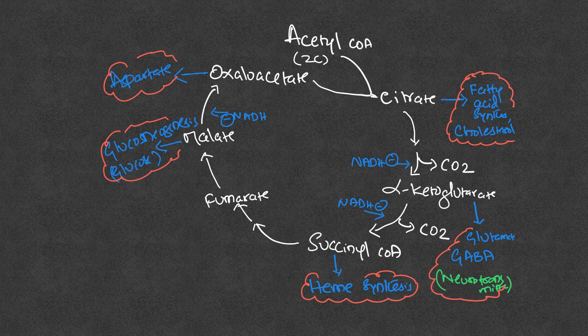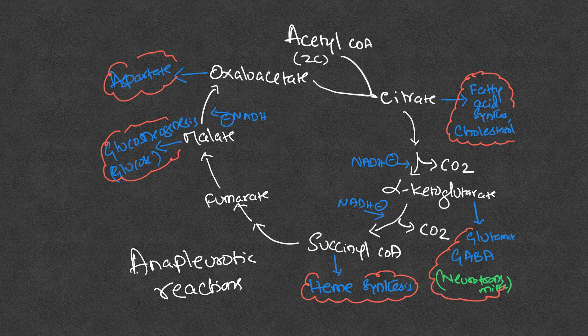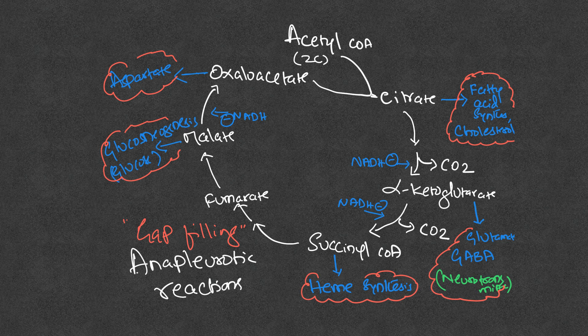These gap-filling reactions are called anaplerotic reactions. Anaplerotic reactions simply fill the gap in the TCA cycle whenever intermediates are removed. The most important example of an anaplerotic enzyme is pyruvate carboxylase.